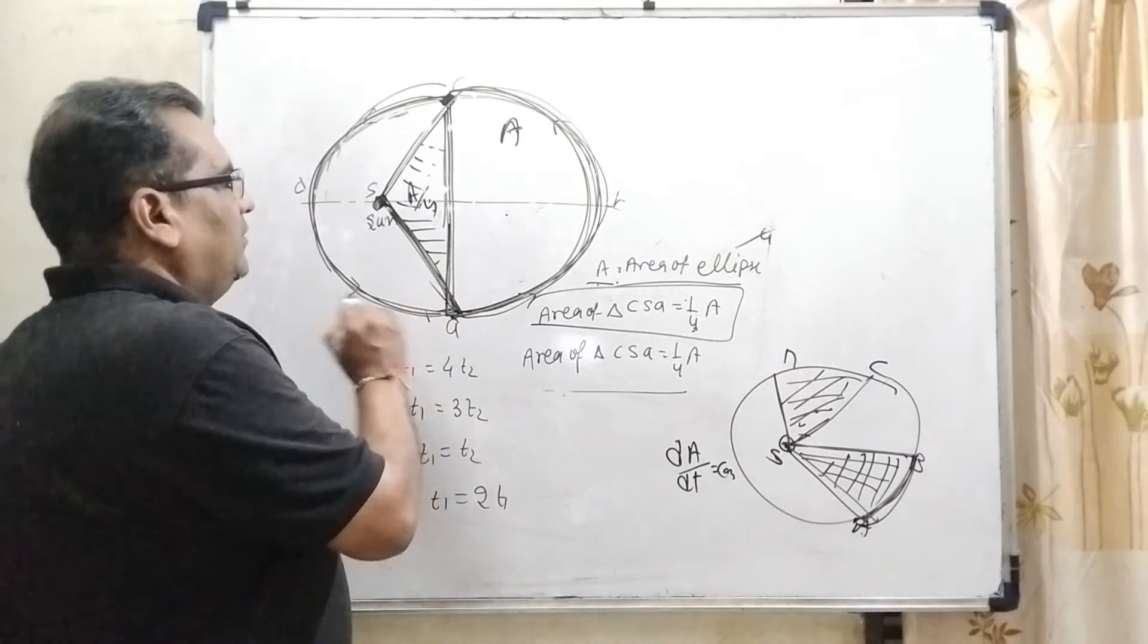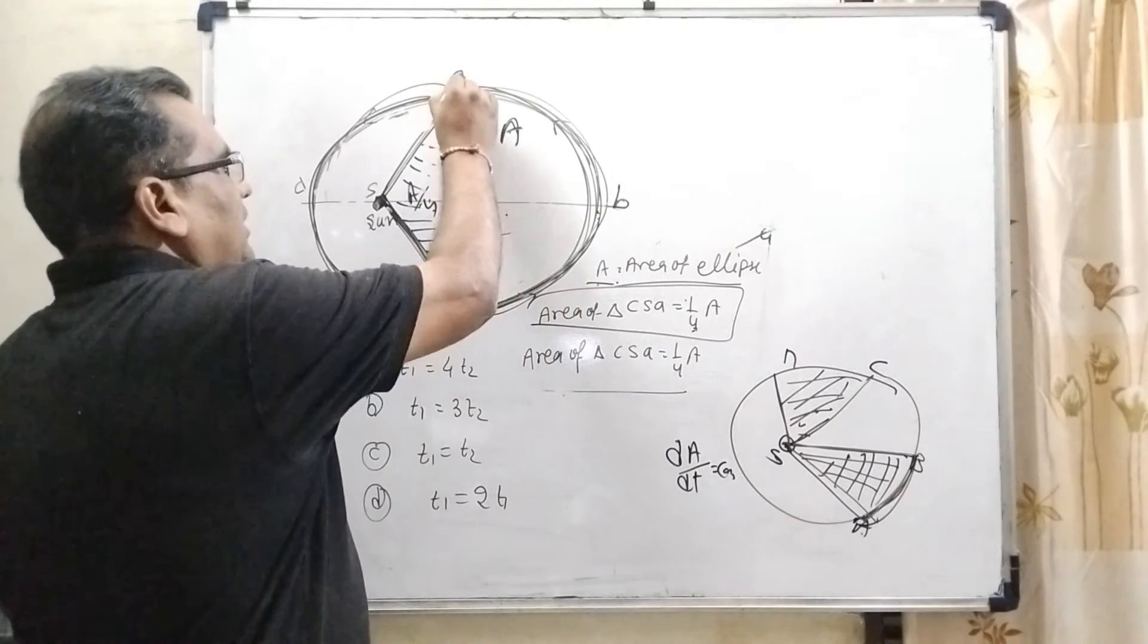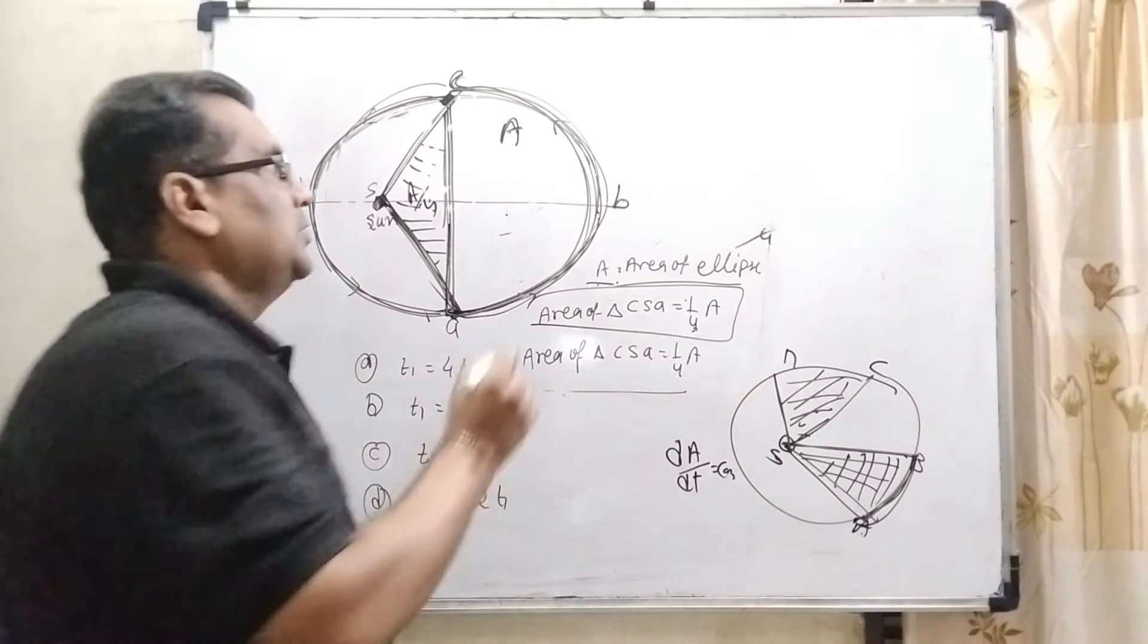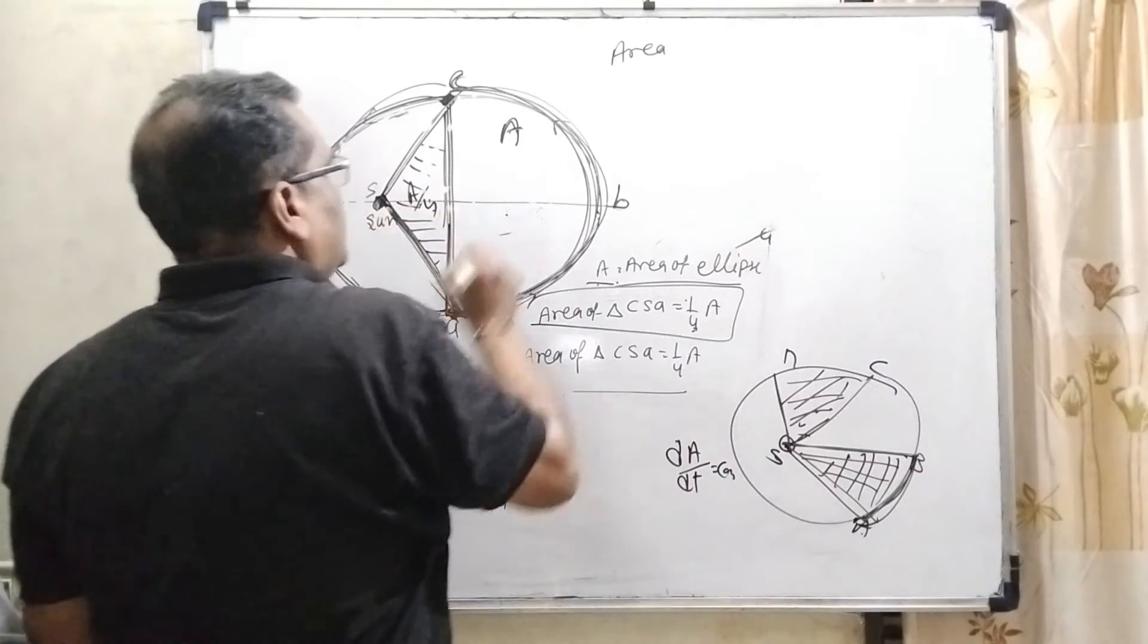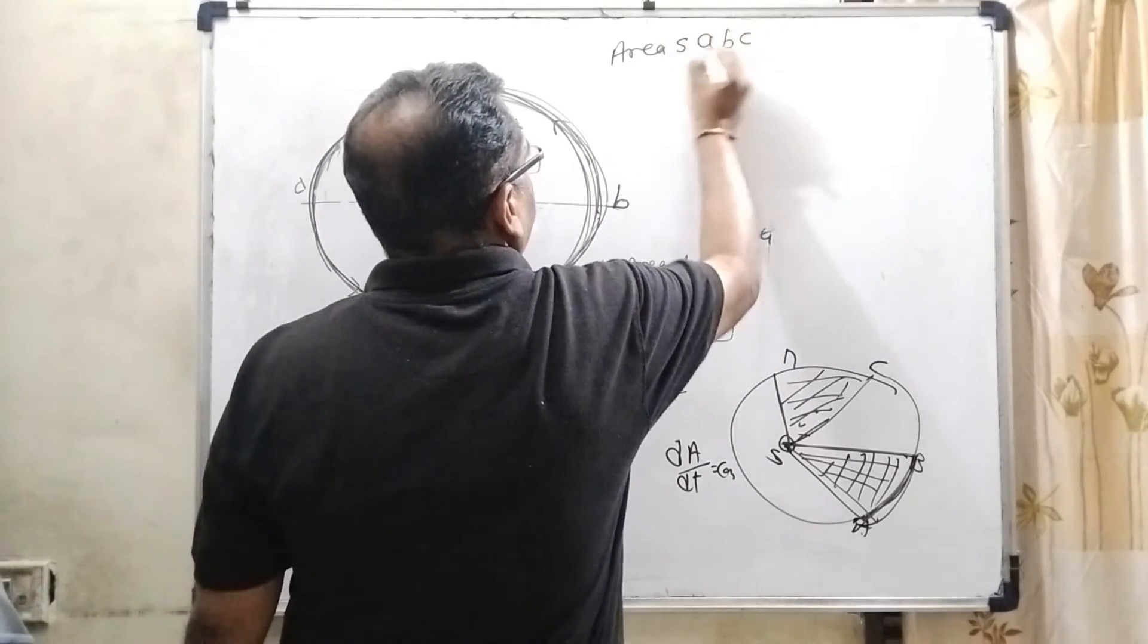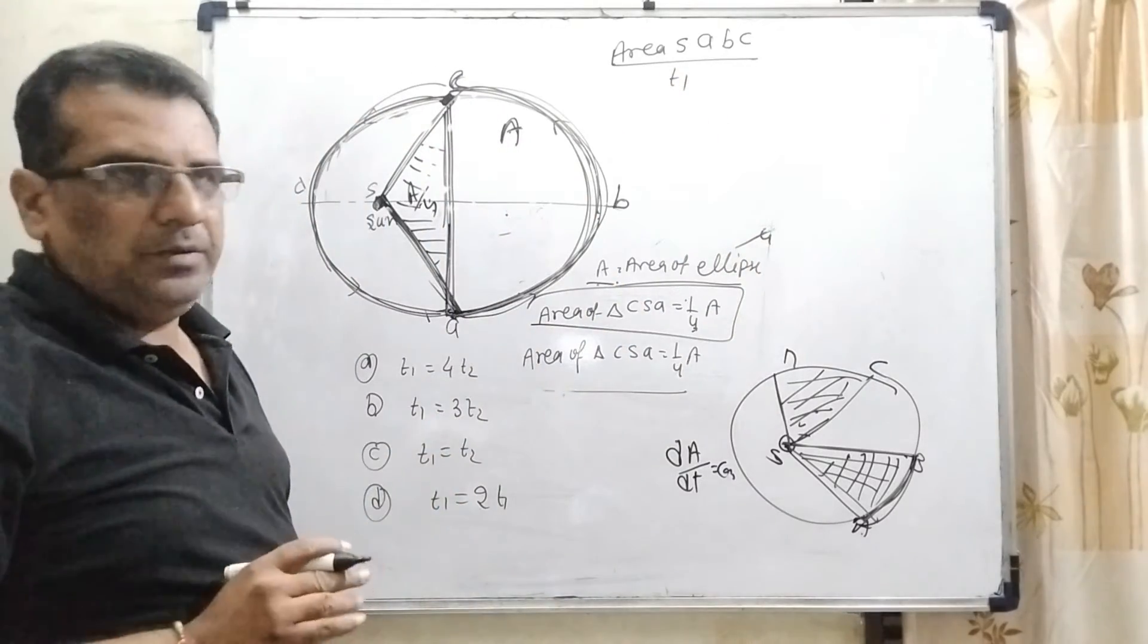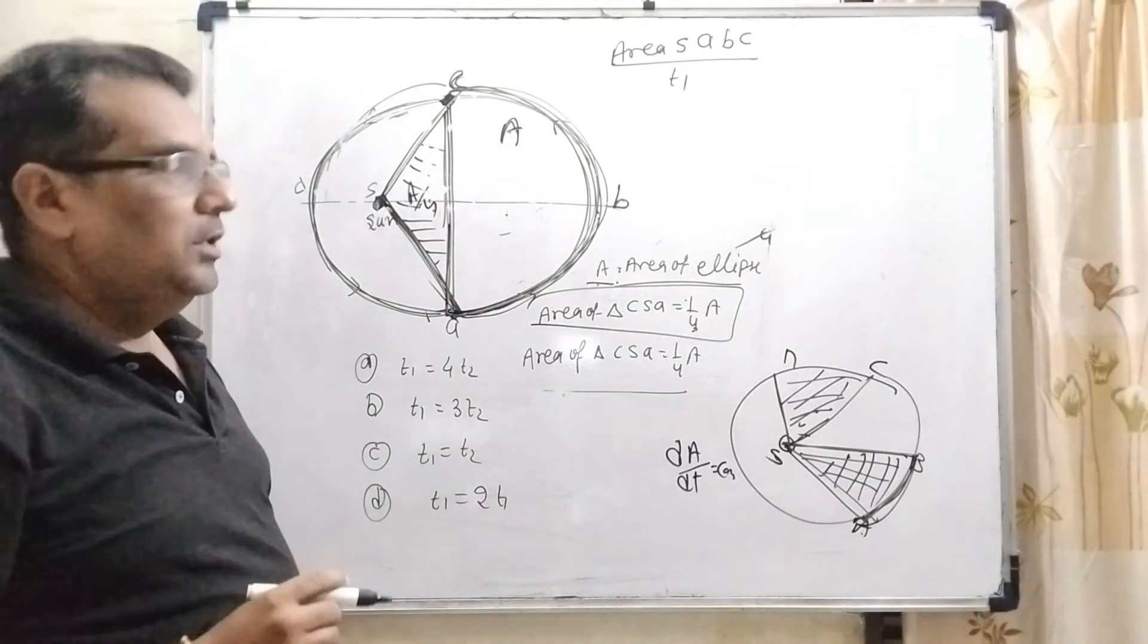So, in first case, here planet covers distance A, here B and here C. But remember all distances are measured from Sun. So, here we have to take area from S, A, B, C upon time T1. It is given in the question. This time is covered T1 and remaining time is T2.